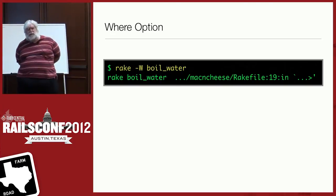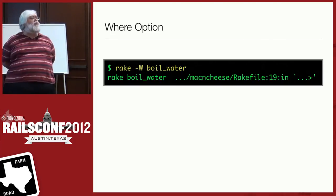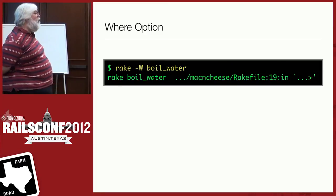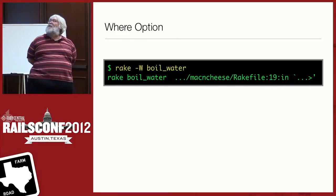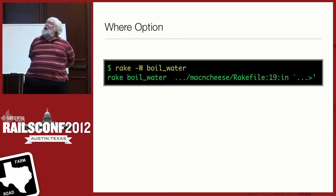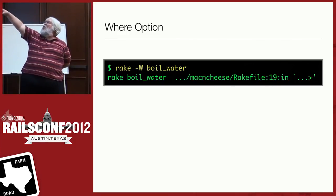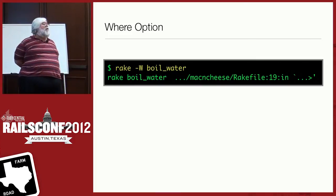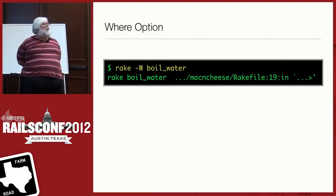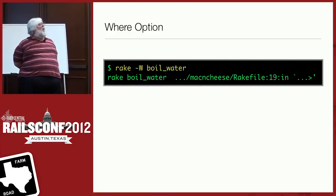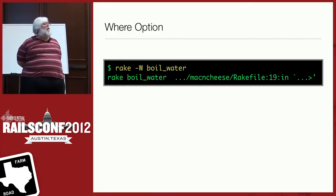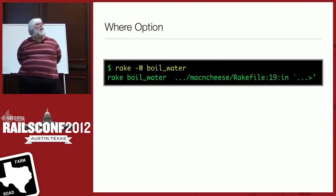Here's a cool command recently added to rake: `rake -W` with a task name will tell you exactly where that task is defined — which file and which line number, for example line 19 of a particular rake file. That's really handy. Unfortunately it currently only works with documented tasks — finding undocumented tasks is a bug we plan to fix in the next version.